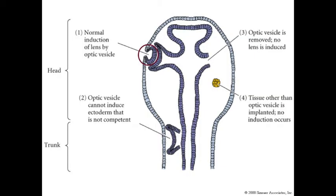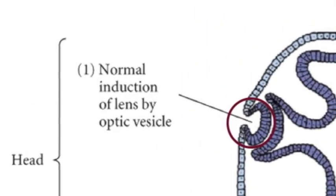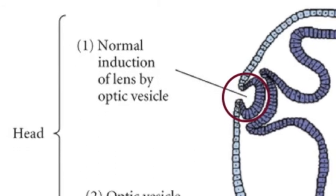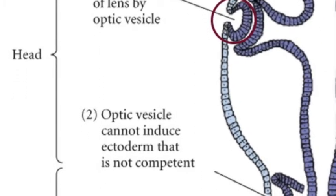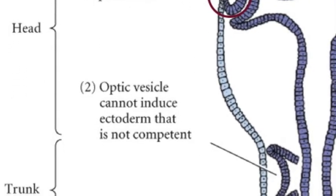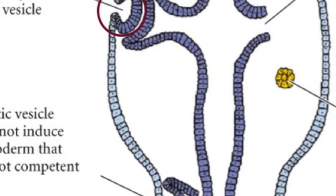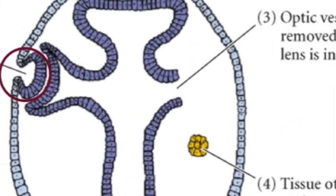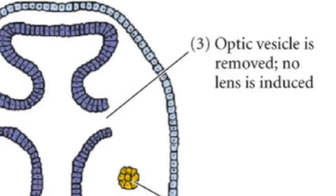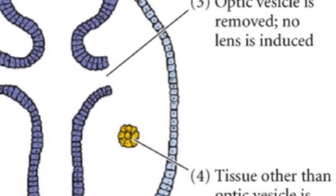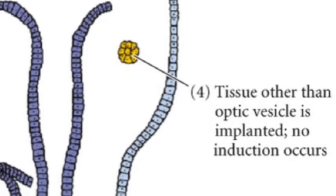For example, the eye is controlled by a gene known as Pax-6. If everything is in its place, like in part one, a lens will form. However, if the optic vesicle, which is expressing Pax-6, is moved to the trunk of the embryo, no lens will be formed, as seen in part two — because the trunk cells are not the right type of stem cell. If the optic vesicle is removed, as in part three, there is no Pax-6 expression and therefore no lens will be formed. Finally, part four shows that when a different type of stem cell is inserted, no lens will form. These four experiments show that certain stem cells induce new fates and structures in other types of stem cells.